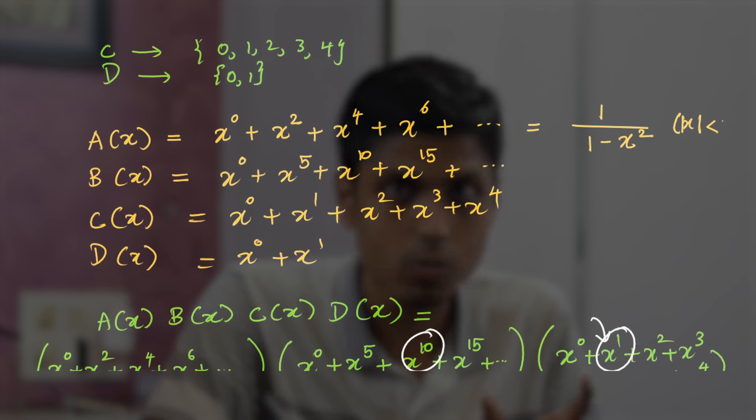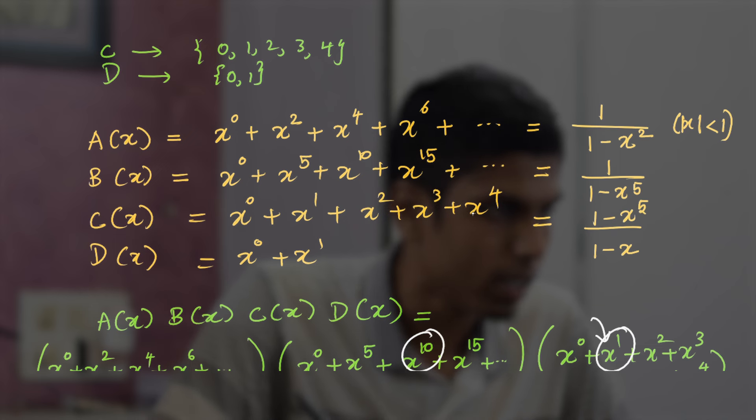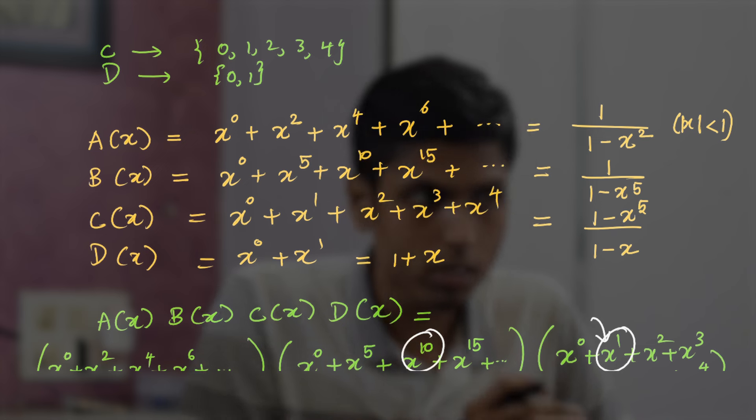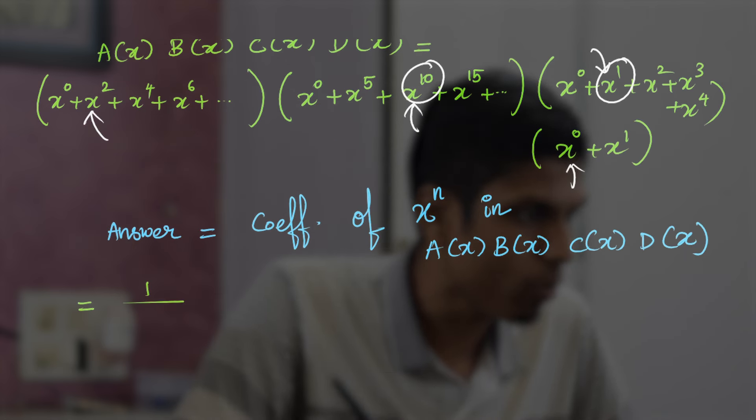Whereas this simplifies to 1/(1 - x^5), and this simplifies to 1/(1 - x), and in the numerator you will have 1 - x^5 as there are 5 terms. And this is just 1 + x.